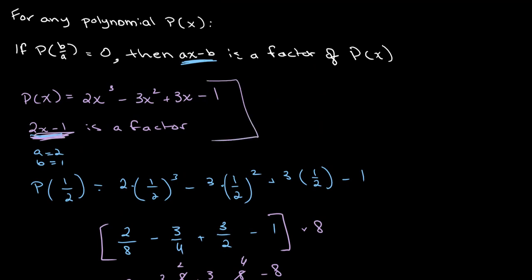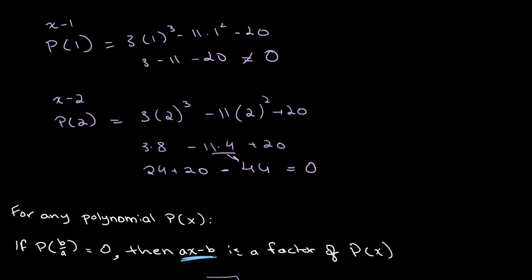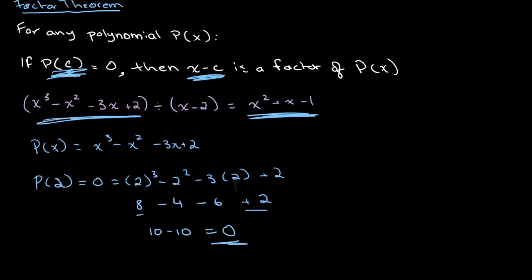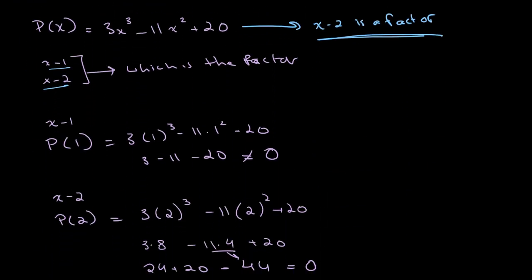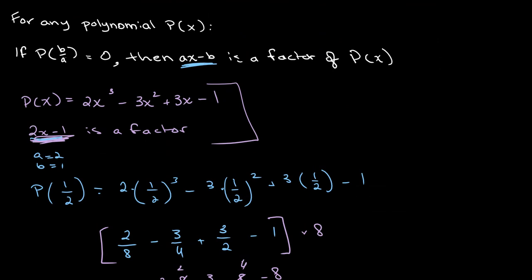So just as a quick recap: for any polynomial p of x, if p of c is equal to 0, then x minus c is a factor of p of x. And another way to write this is: for any polynomial p of x, if p of b over a is equal to 0, then ax minus b is a factor of p of x.